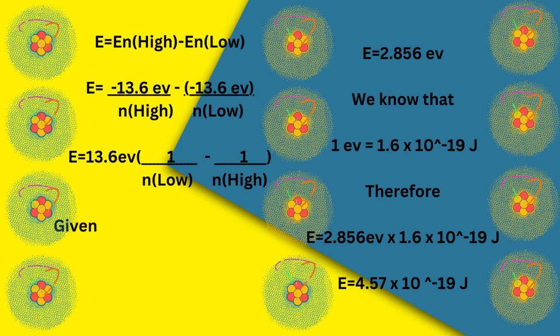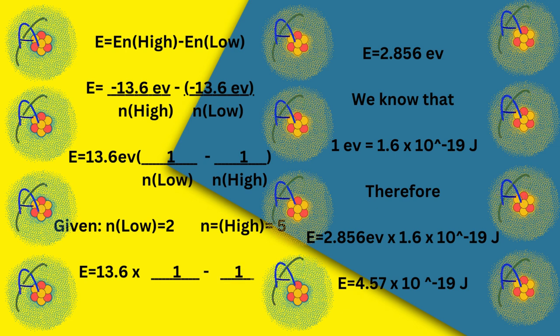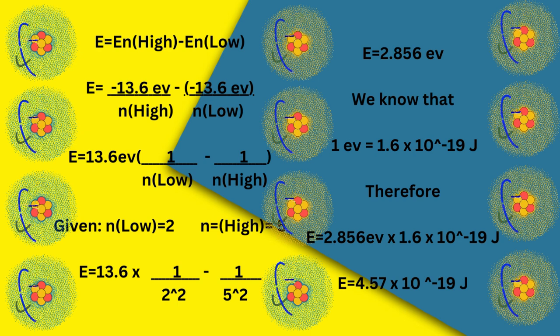We know that 1 eV = 1.6 × 10⁻¹⁹ J. Therefore, E = 2.856 eV × 1.6 × 10⁻¹⁹ J/eV = 4.57 × 10⁻¹⁹ Joules.